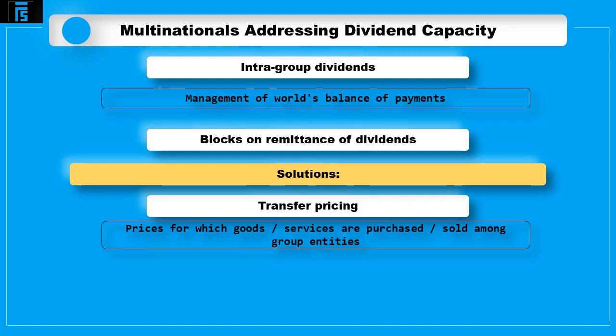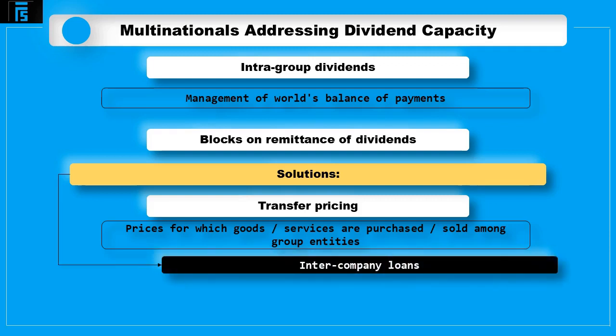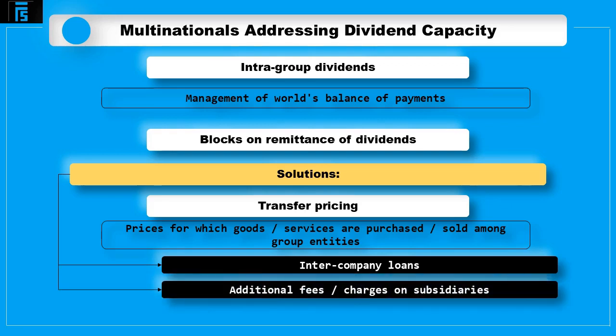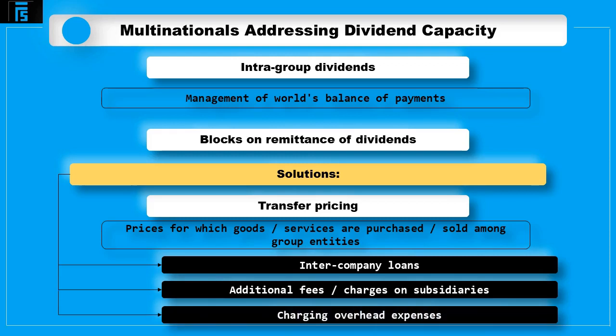Other means of avoiding remittance blocks include using intercompany loans. For example, a subsidiary may, instead of paying a dividend, grant a loan to the parent. The parent may also impose additional fees and charges on its subsidiaries, such as royalties for using trademarks, patents, or for providing consulting and management services, which will be settled within the transfer pricing system.